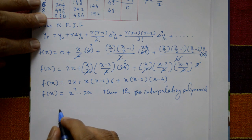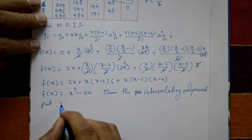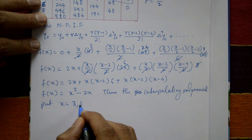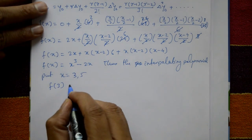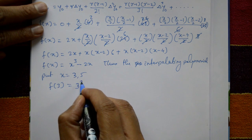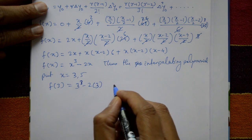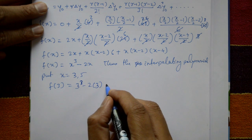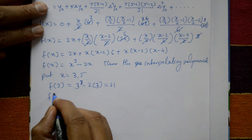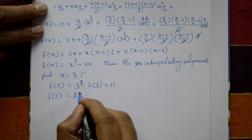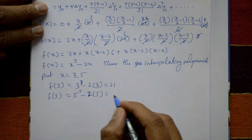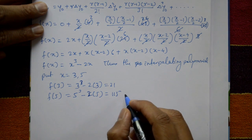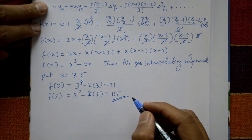Now substituting: f(3) = 3³ − 2(3) = 27 − 6 = 21. And f(5) = 5³ − 2(5) = 125 − 10 = 115. This is the required solution.